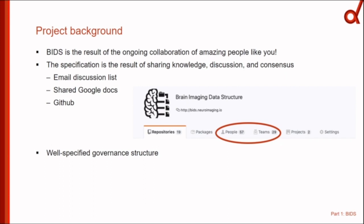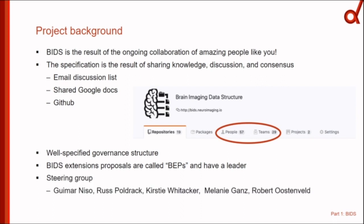BIDS will continue to grow through extension proposals, referred to as BEPs — BIDS Extension Proposals. Each BEP has one or two people leading the discussion. As of last year, there's also a steering group, which is not doing the work or deciding anything, but overseeing efforts and motivating people. The steering group consists of Guillaume Marniso in Madrid, Russ Poldrack, Kirstie Whittaker who spoke here on Tuesday, Melanie Gantz — a PET researcher in Copenhagen — and myself. The goal is to represent different modalities and different career levels, because BIDS should be relevant for all scientists.